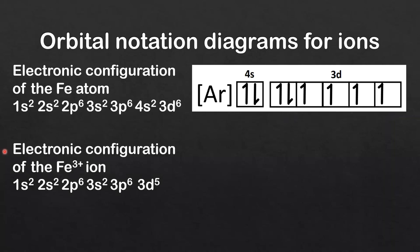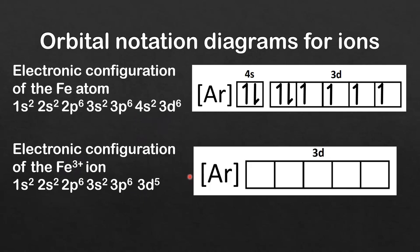Next we look at the electronic configuration of the Fe3+ ion: 1s2, 2s2, 2p6, 3s2, 3p6, 3d5. We've lost 3 electrons — the 2 electrons in the 4s orbital and 1 electron from 3d. In the orbital notation diagram for Fe3+, only the 3d sublevel remains. According to Hund's rule, we fill the 5 degenerate d orbitals singly, and each d orbital has 1 electron with the same spin.